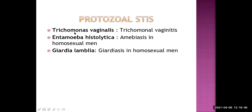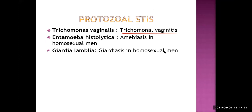From the protozoa, we have Trichomonas vaginalis, which leads to trichomoniasis or trichomonas vaginitis in females. They have vaginal discharge and a very itchy condition. Entamoeba histolytica can lead to amoebiasis in homosexuality, and Giardia lamblia, though it causes gastrointestinal disease, may also be seen in homosexuality. These are some of the protozoal types of STI.